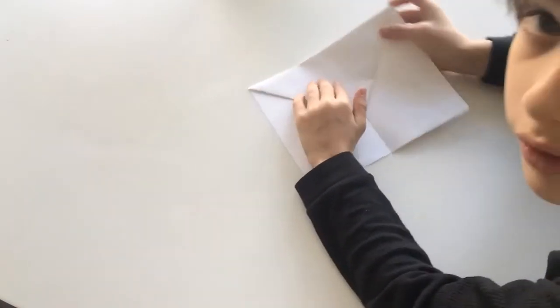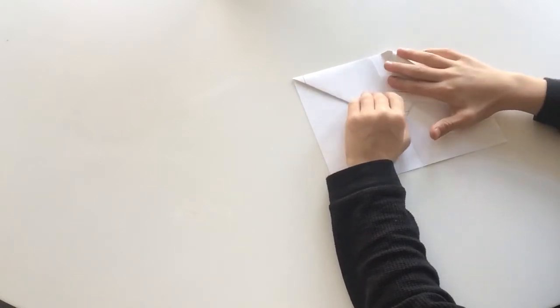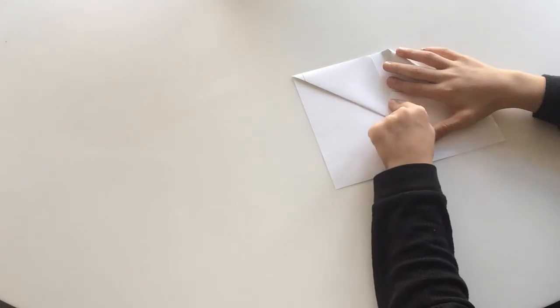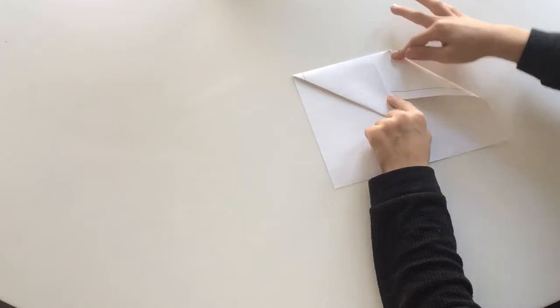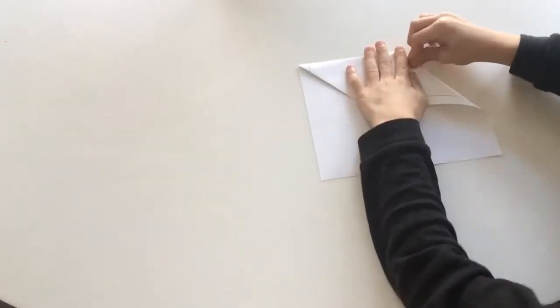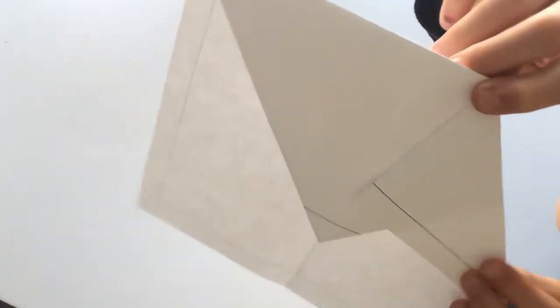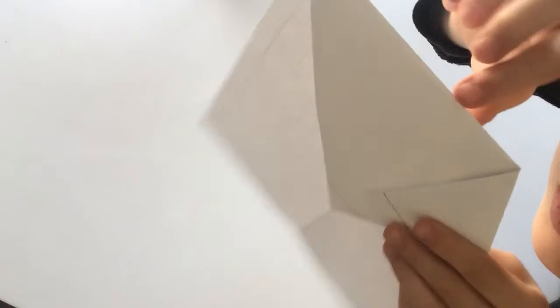And then what you're going to do, you're going to take this corner right here, and then you're going to take it and you're going to fold it down to about right there. And there should be a little bit of space, and you fold it. I'll show you in a second. There should be a little bit of space from the center crease. Look, there's a center crease, and there's the thing. And look, there should be a little space.